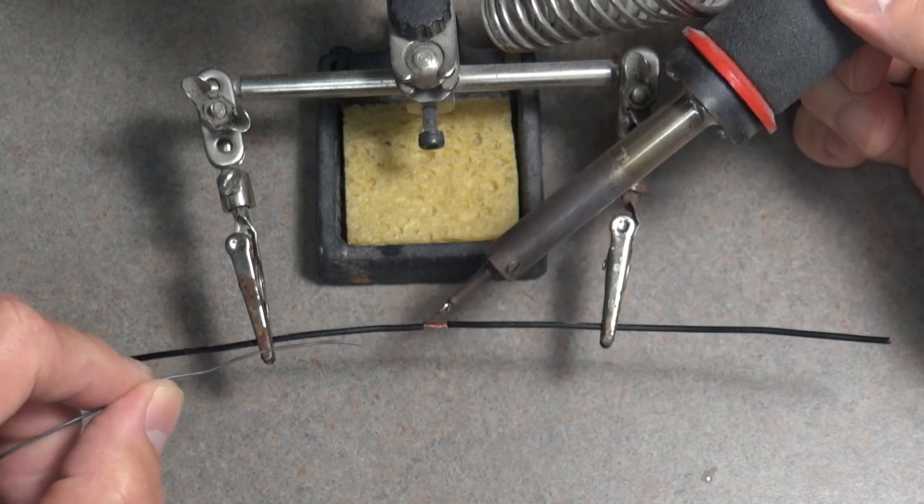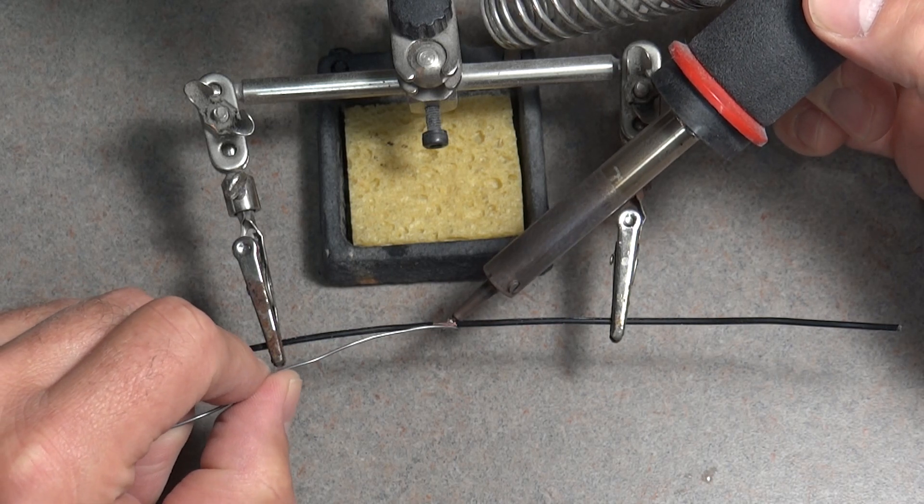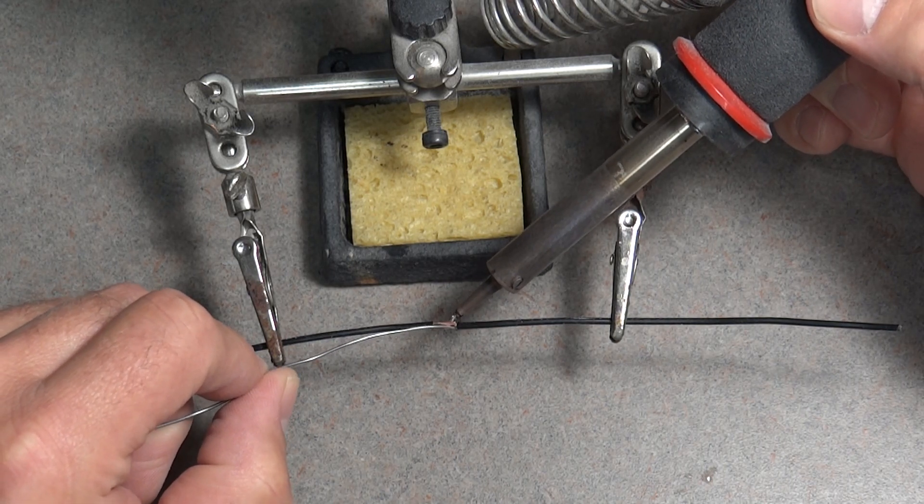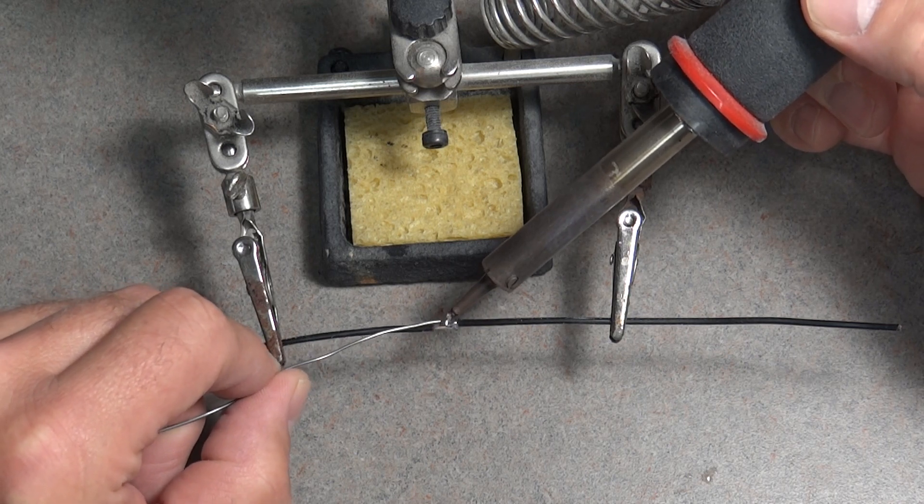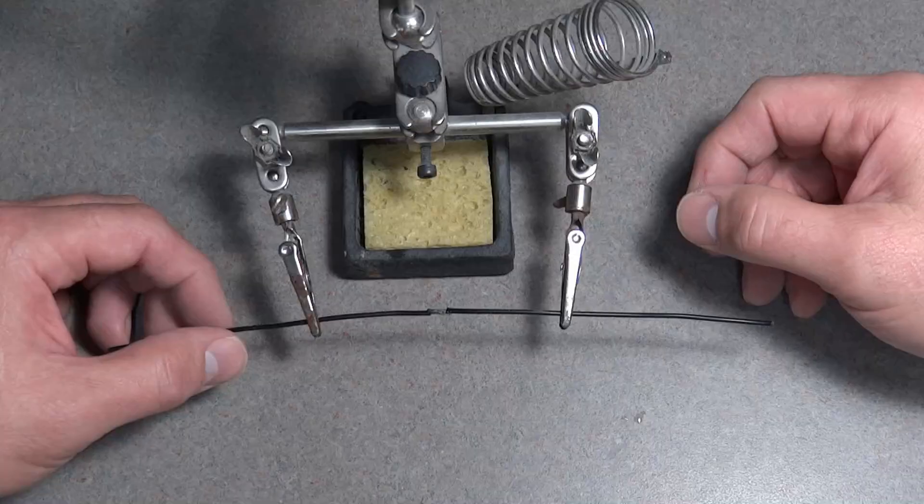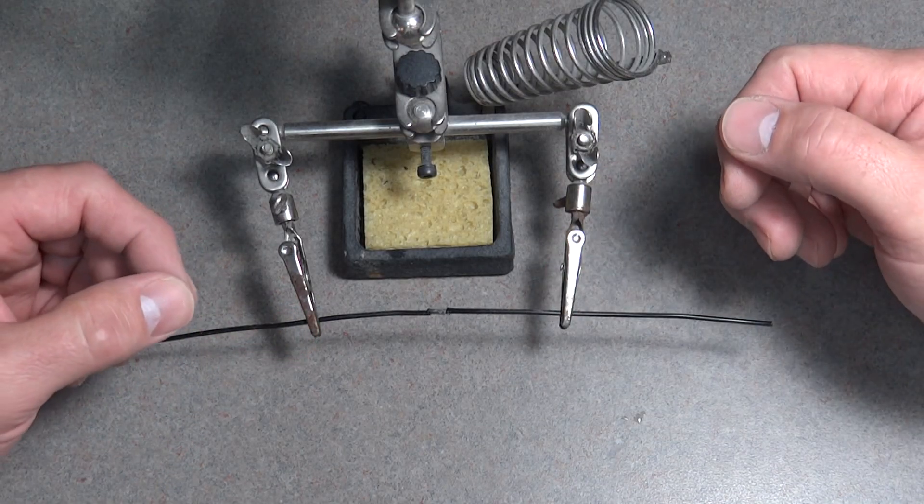After freshly tinning the iron, bring the iron up underneath the leads, then touch the leads and add solder from the top at the same time. Since heat rises, it will transfer the heat better from below the wires. Once you see the solder has flowed into the connection, remove the iron immediately.